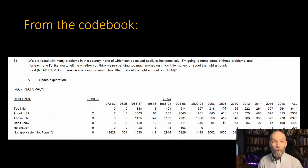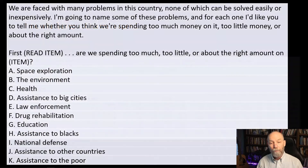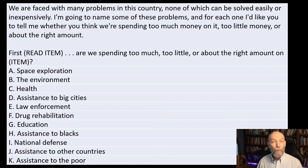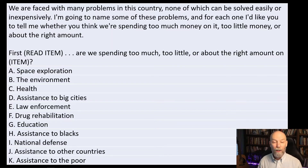Those never asked a question received a value of zero. After reviewing the codebook, I compiled the list of items people were asked whether too little, about right, or too much is being spent on: space exploration, the environment, health, assistance to big cities, law enforcement, drug rehabilitation, education, assistance to blacks, national defense, assistance to other countries, and assistance to the poor.